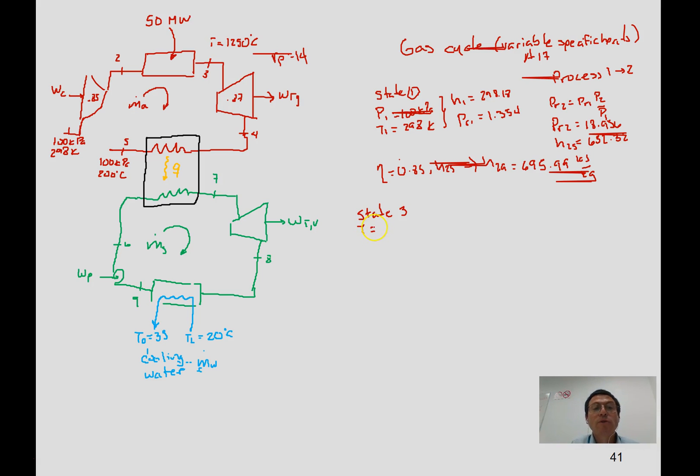Using the isentropic efficiency of 85 percent, we get h2a. Now state 3 is fixed with a temperature - it's 1250, but that's Celsius, so we need to convert to kelvin. That would be 1523 kelvin. Pressure of course is 14 bar.